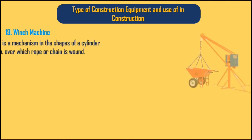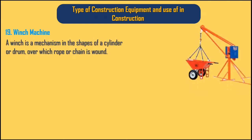19. Winch Machine. A winch is a mechanism in the shape of a cylinder or drum over which rope or chain is wound.